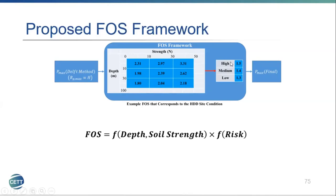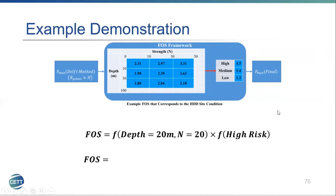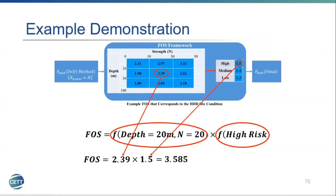As an example: for an HDD bore at 20 meter depth with an N-value of 20 in a high-risk environment, applying 20 m depth and N-value of 20 gives a factor of 2.39. For high risk, a factor of 1.5 is obtained. Combining these gives the overall factor of safety. Then the Pmax for the final design is calculated by dividing the DELF-estimated Pmax by this combined factor.